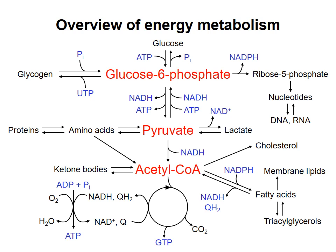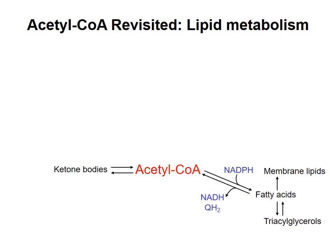In previous videos, I've already talked about most of the pathways represented on this diagram, but I need to come back to acetyl-CoA to discuss lipid metabolism as it relates to energy usage. I'll discuss four main topics here: release of fatty acids from triacylglycerols, beta-oxidation of fatty acids to acetyl-CoA, the role of ketone bodies, and finally fatty acid synthesis from acetyl-CoA.